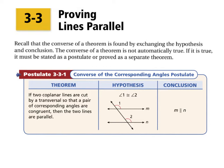The corresponding angles postulate said if you had parallel lines with a transversal that cuts them, the corresponding angles are congruent. This is just the opposite: if two coplanar lines are cut by a transversal so that a pair of corresponding angles are congruent, then the lines are parallel. So if you know that lines M and M are cut by a transversal and angles 1 and 2 are congruent, then you know the lines are parallel.